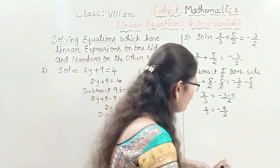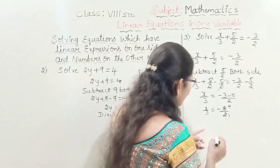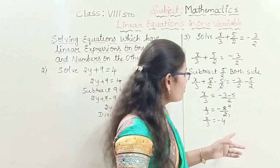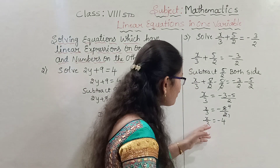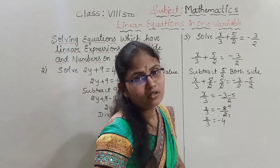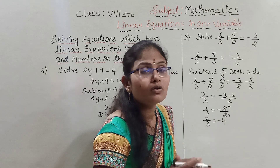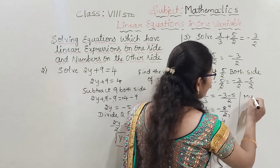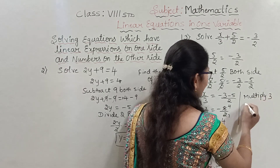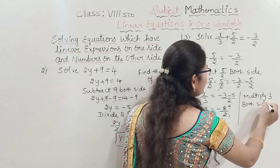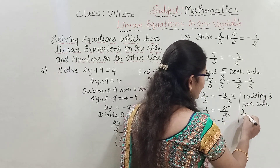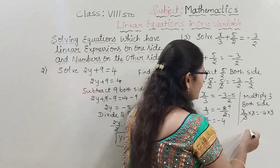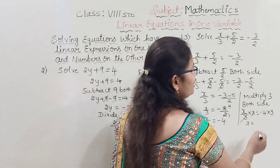We can simplify minus 8 by 2: 2 goes into 8 four times, so minus 8 by 2 equals minus 4. Now x by 3 equals minus 4. The relationship between x and 3 is division, so the reverse is multiplication. We multiply both sides by 3: x by 3 times 3 equals minus 4 times 3. The 3's cancel, giving x equals minus 12.